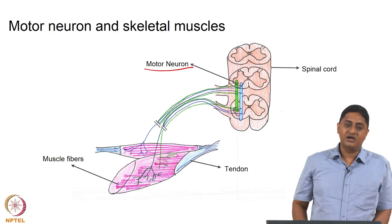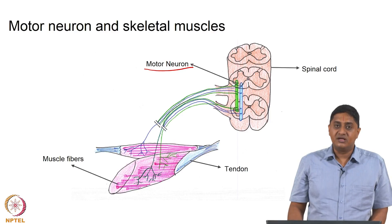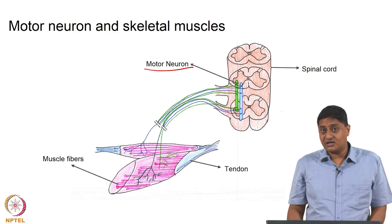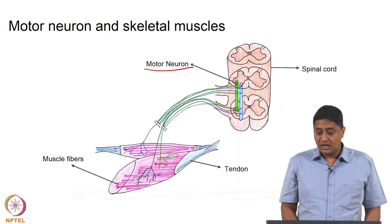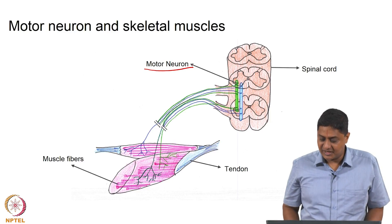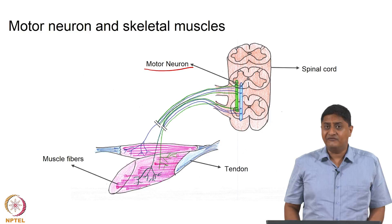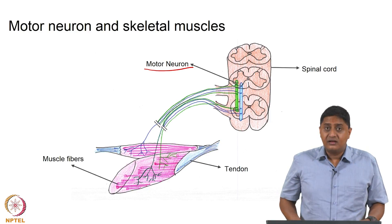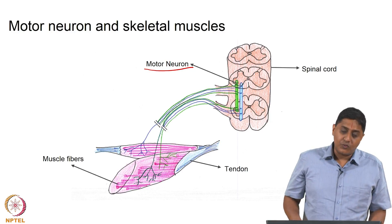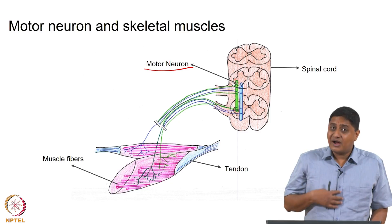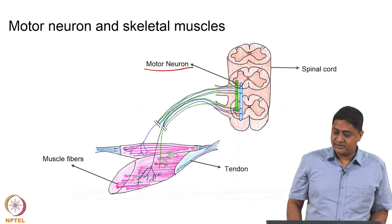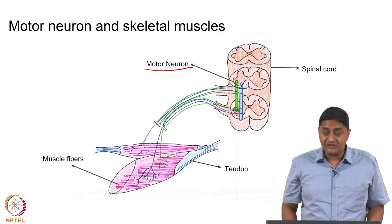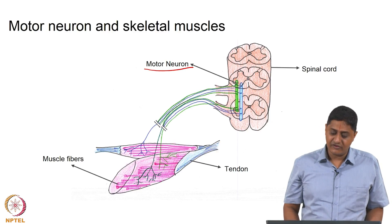Motor means movement, and movement in the body is produced by contraction of muscles. So neurons that cause muscle contraction are called motor neurons. These motor neurons are located at the ventral side of the spinal cord. When an animal is on its four limbs — a quadruped — the part of the body that faces the ground is called the ventral side, and the part that faces the sky is called the dorsal side. The ventral side of the spinal cord houses ganglia or nuclei that contain a large number of motor neurons.